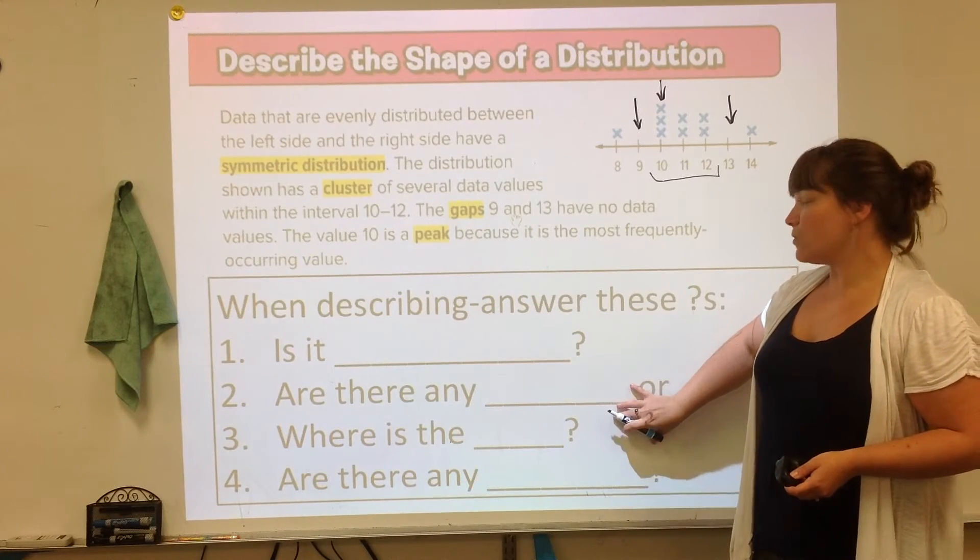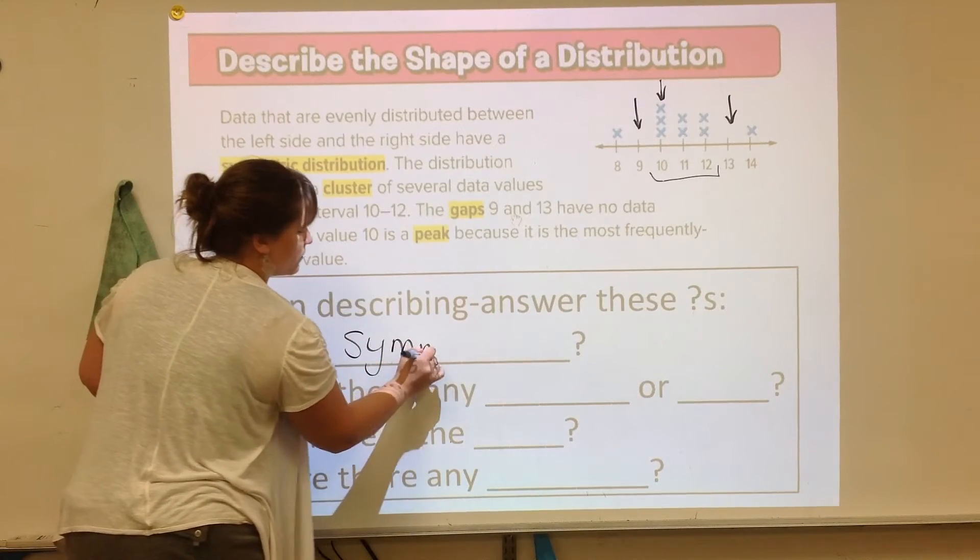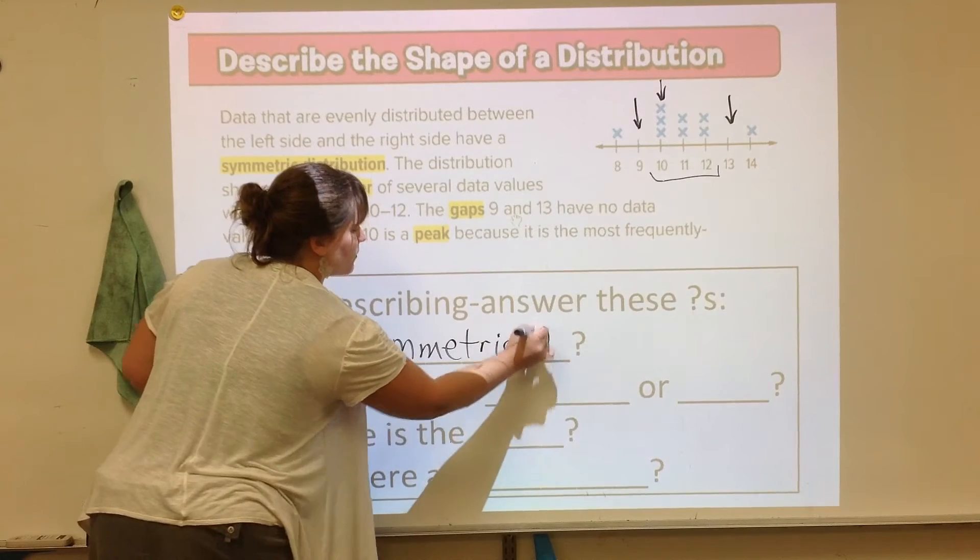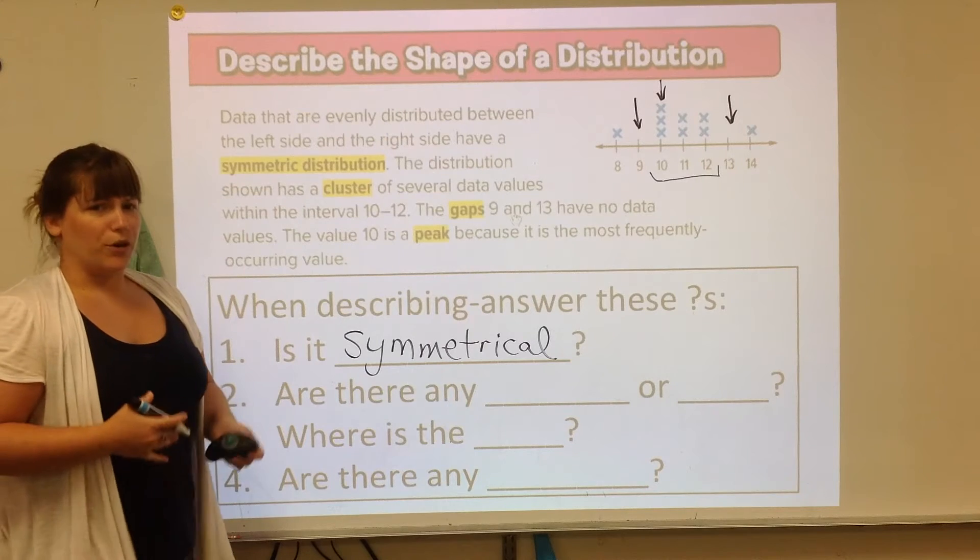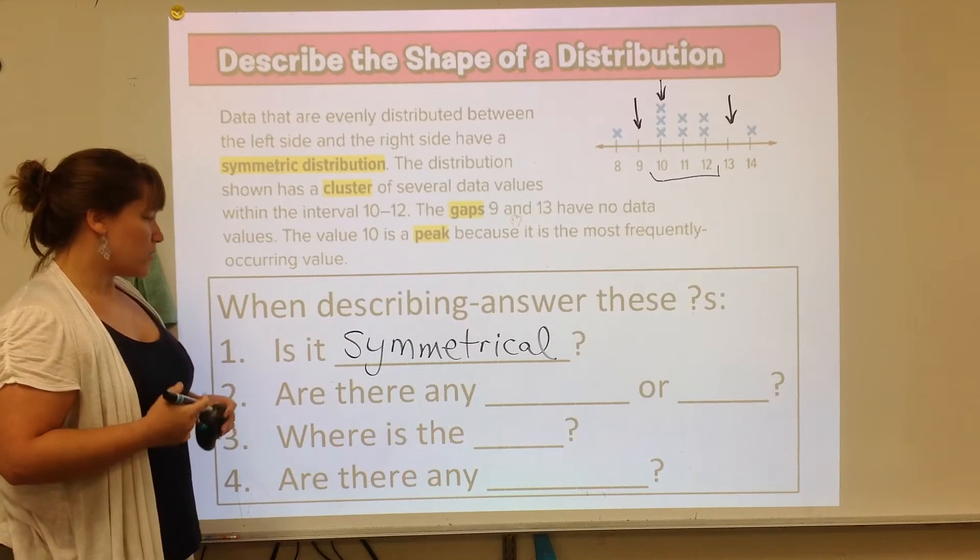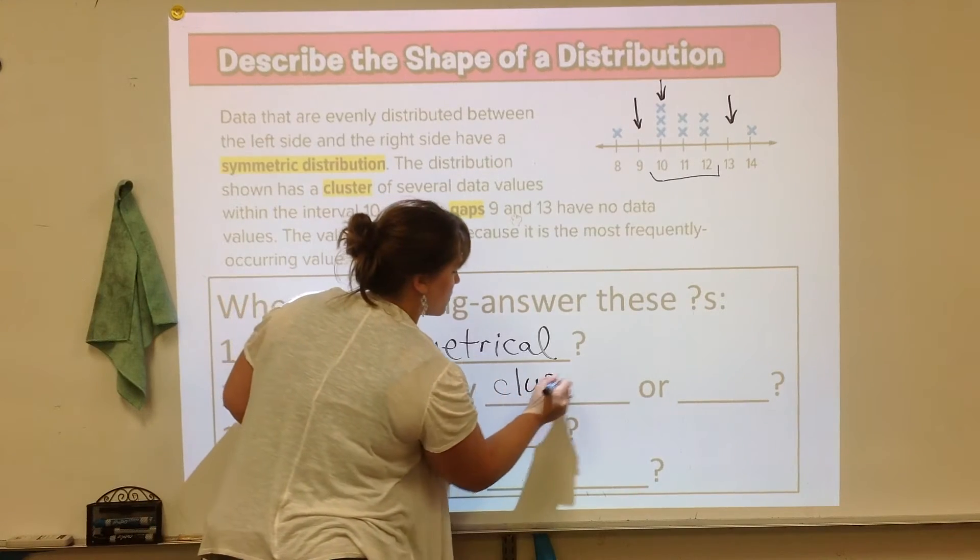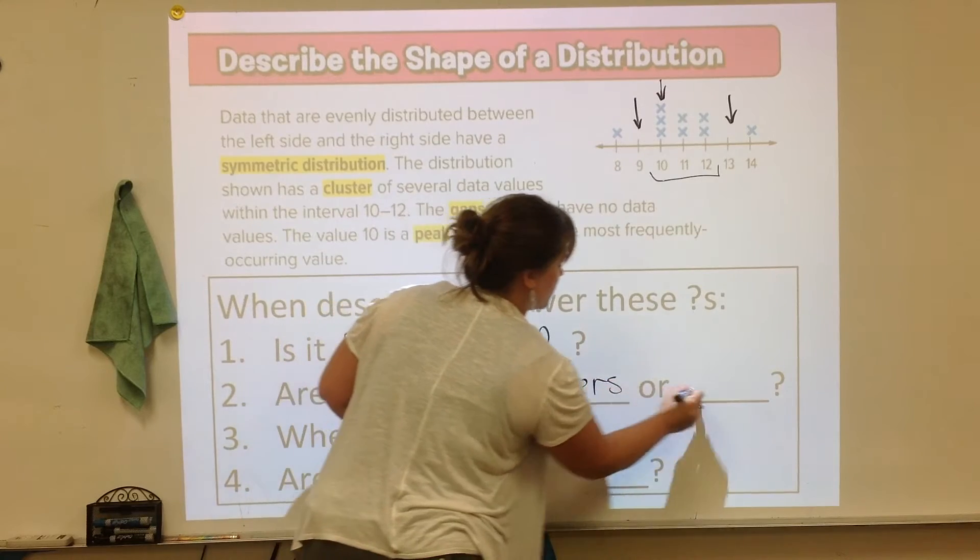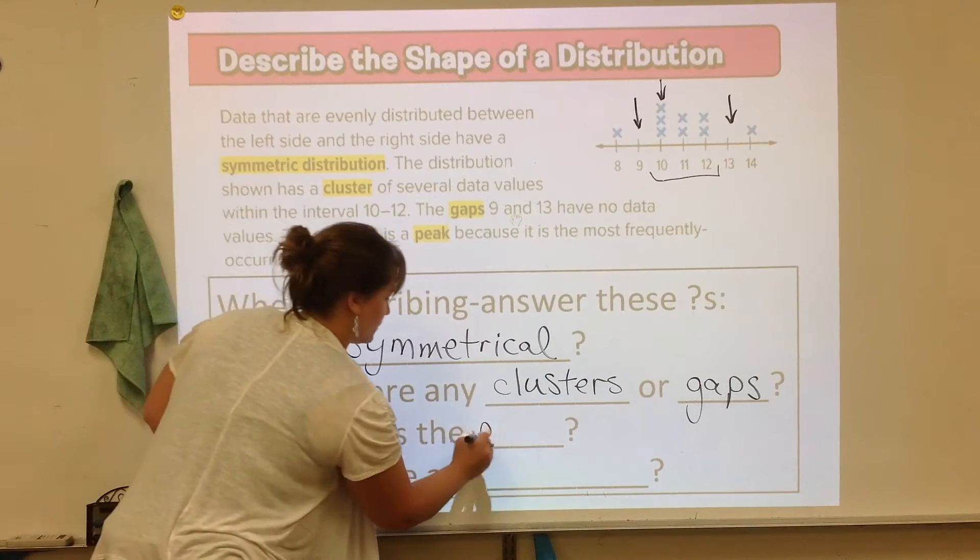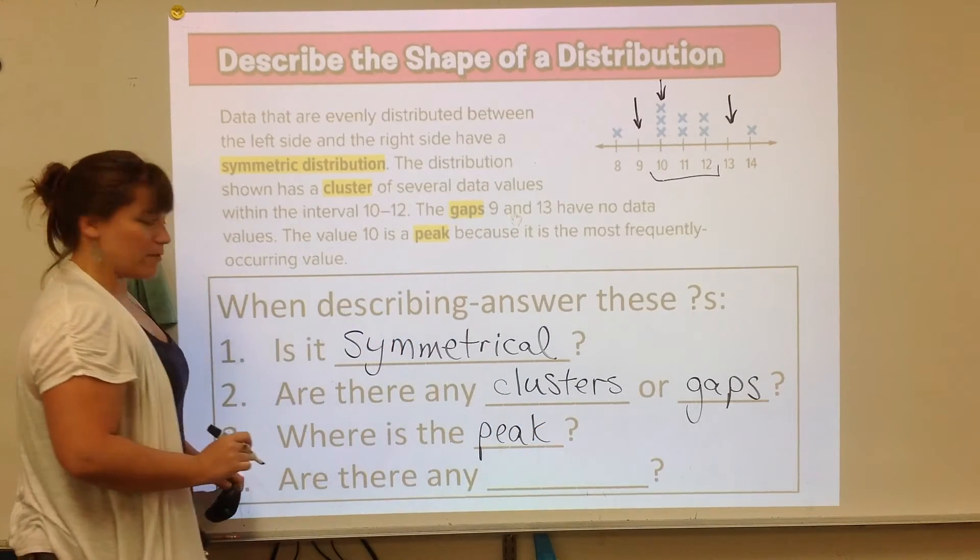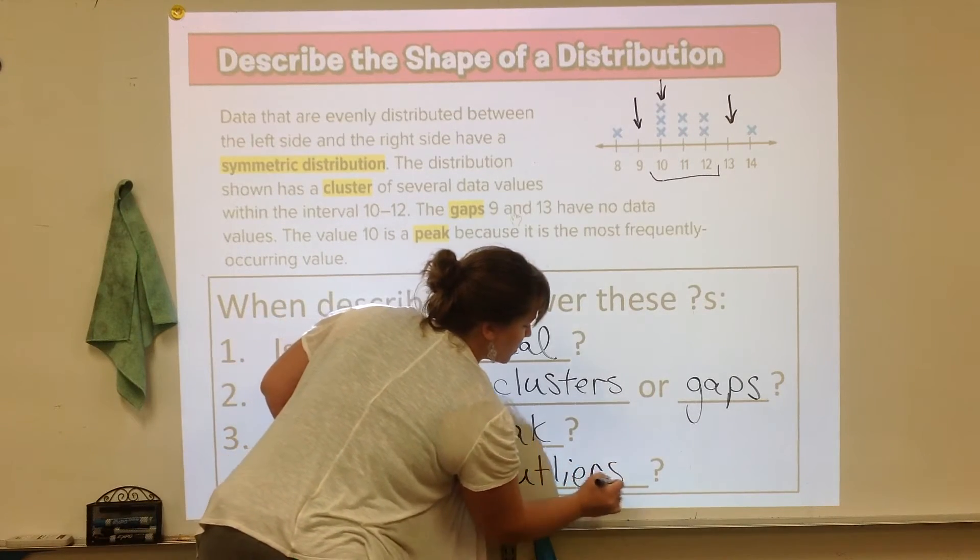When describing, you can answer these questions. Is it symmetrical? That's the first thing. So you can answer yes, it has symmetrical distribution or no, it's not symmetrical. Second thing you can answer is are there any gaps or clusters? Clusters are gaps. It doesn't matter, but clusters first. Where is the peak? Another thing you can ask yourself. And are there any outliers? That's another thing you can talk about when asked to describe the distribution.